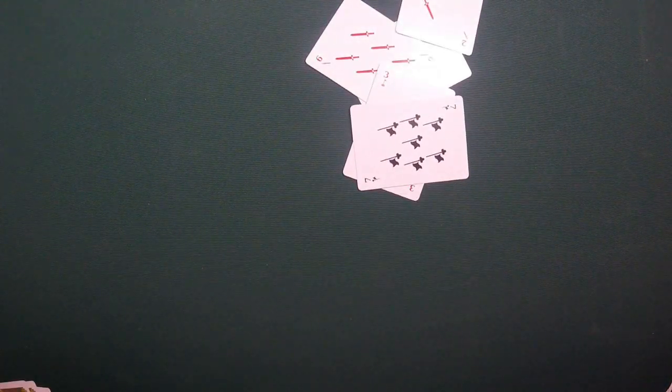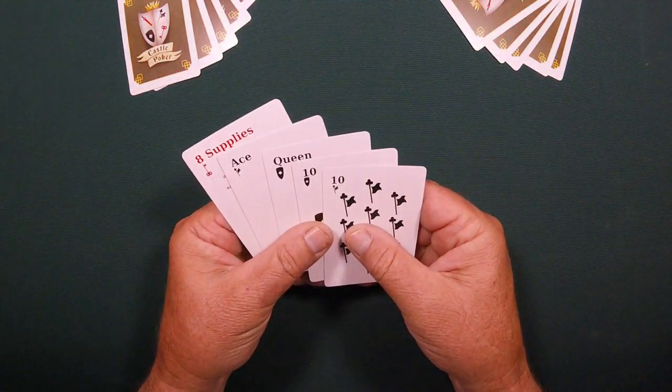The discards are dealt face up, so everyone gets a hint at what other players are thinking. The dealer refills each player's hand back to 5 cards.